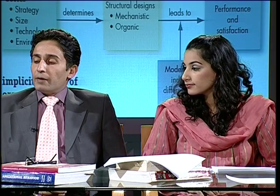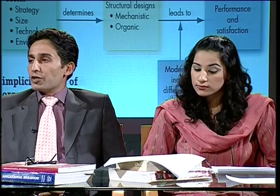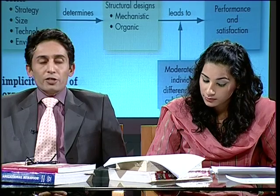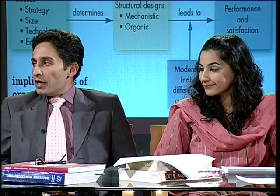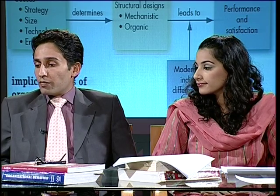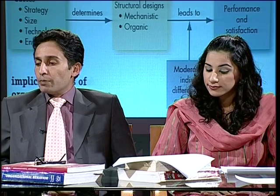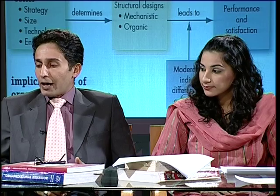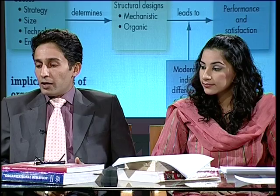A student asked about the determinants and outcomes of organizational structure. The four determinants are: strategy, size, technology, and environment. Structural designs are generally either mechanistic or organic, and the outcomes lead to performance and satisfaction, moderated by individual differences and cultural norms present in any society. This is known as the implicit model of organizational structure — the perceptions people hold regarding structural variables, formed by observing things around them. A good organization must approach structural choice scientifically to lead to required performance.